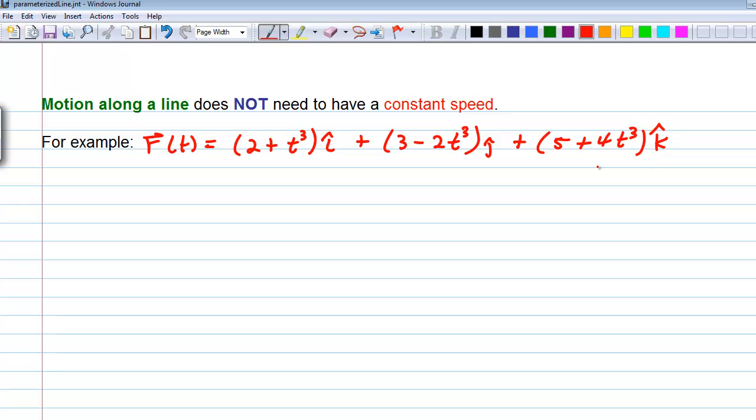All we've done is replace t with t cubed in each place. And as long as you replace t with the same function of t everywhere in the vector-valued function, you will trace out at least part of the same path. It doesn't necessarily end up always covering the whole thing, although here using t cubed, since it does have a range of negative infinity to infinity, it will cover the whole line.